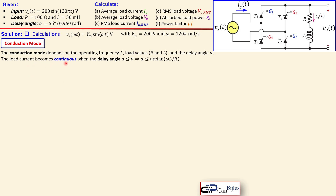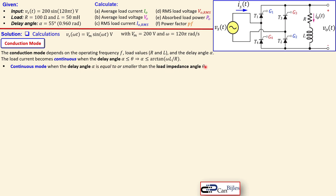The load current becomes continuous when the delay angle α is smaller than or equal to the impedance angle θ, given by arctan(ωL/R). In summary: continuous mode (CCM) when α ≤ θ, and discontinuous mode (DCM) when α > θ.